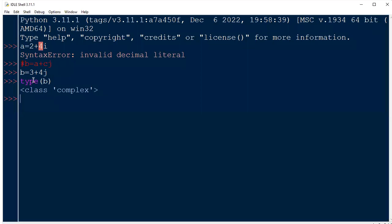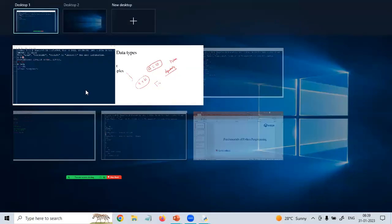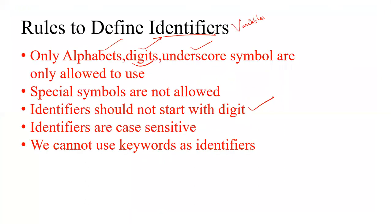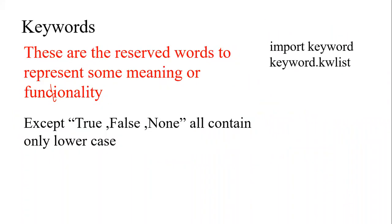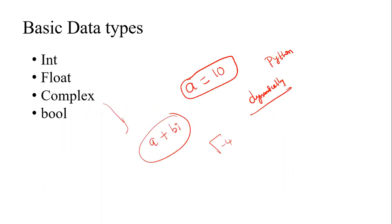Quick recap of what was discussed in this session: as part of the basic fundamentals of Python programming, we talked about identifiers and the rules to define them — checking all the rules for a variable. Next we discussed keywords and what keywords are available. Then comments, and finally basic data types. There are also a few more data types and operators that we will be discussing in the coming sessions.